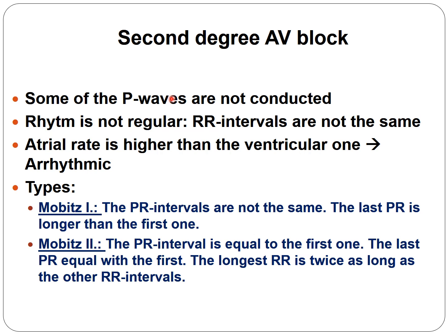Second degree AV blocks: in these blocks, some P waves are not conducted, so the rhythm is not regular. The RR intervals are not the same, the atrial rate is higher than the ventricular rate, and it is arrhythmic. In Mobitz Type 1, the PR intervals gradually get longer and longer until there is an unconducted beat. In Mobitz Type 2, the PR intervals are equal — they can be normal or longer but they do not change. The dropped RR interval in Mobitz Type 2 is exactly twice the other RR intervals, whereas in Mobitz Type 1 the long pause is less than twice the last RR interval.